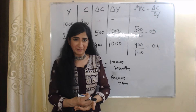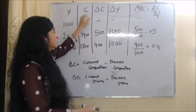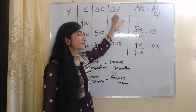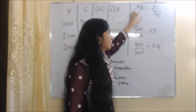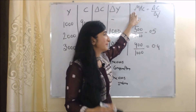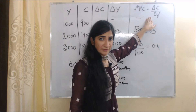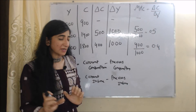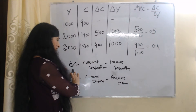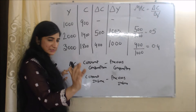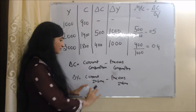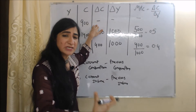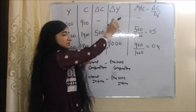Now we are going to talk about the table of MPC. In the first column we have income, second column we have consumption, third column we have change in consumption, fourth column we have change in income, and fifth column we have MPC. The formula of MPC is change in consumption over change in income. To calculate MPC, we first need to calculate change in consumption — which is current consumption minus previous consumption — and change in income, which is current income minus previous income. In the first case, we don't know the previous year's consumption or income, so we leave it blank.